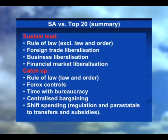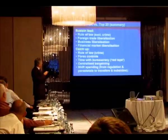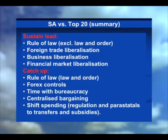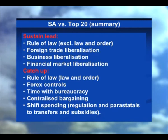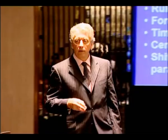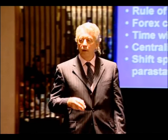In summary, we're already in the lead and should increase our lead in many areas. In these areas — rule of law, foreign exchange, time with bureaucracy, centralized labor bargaining, and shifting spending from economic activity to welfare — these would be the things we'd have to change in South Africa to be more like winners and less like losers.